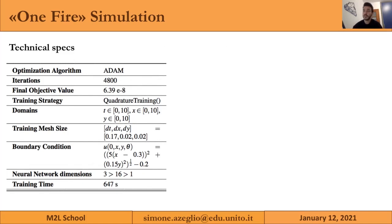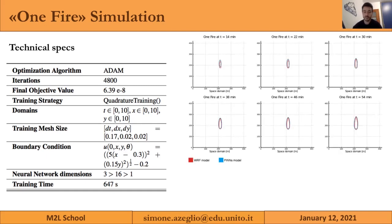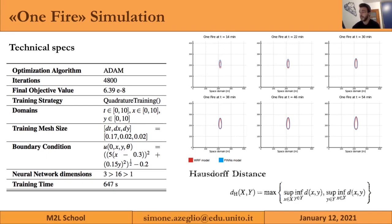We modeled fire spread in a simple case with only one ignition point. Our neural network is very shallow — just one hidden layer with 16 neurons — and training time is on the order of 10 minutes, much faster than WRF's numerical integrators. As you can see, the WRF model (the red one) and our model (the blue one) are pretty much superimposed, and they also grow in time at the same rate. We employed the Hausdorff distance to calculate differences between the two.